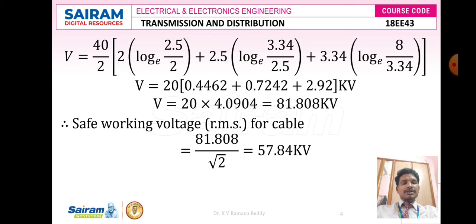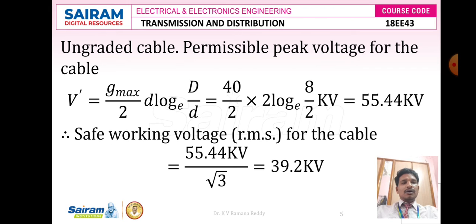After substitution: V equals 40 by 2, that is 20, times 2 times log base e of 2.5 by 2, giving 0.4462, plus 2.5 times log base e of 3.34 by 2.5, giving 0.7242, plus 3.34 times log base e of 8 by 3.34, giving 2.92. Overall V equals 20 times 4.0904, which becomes 81.808 kV. Therefore the safe working voltage RMS for the cable is 81.808 divided by root 2, which equals 57.84 kV.